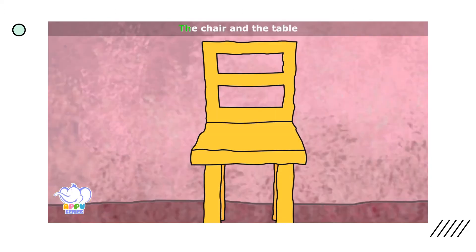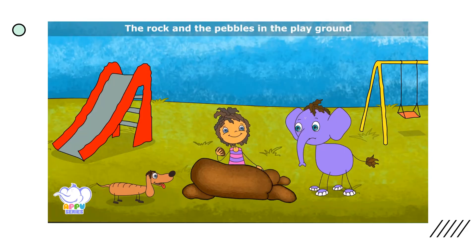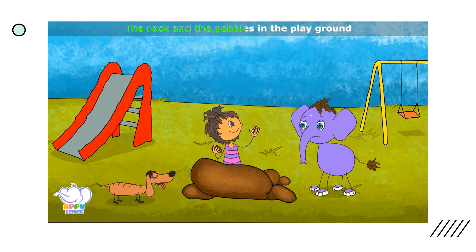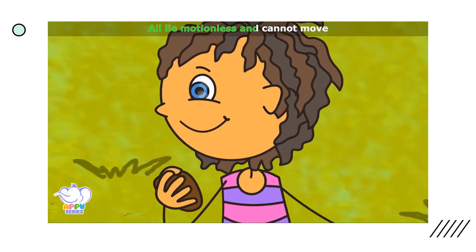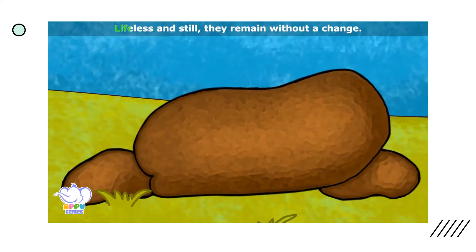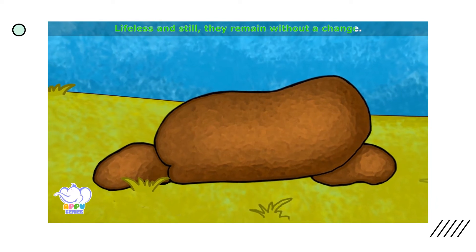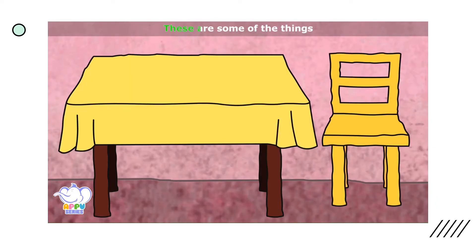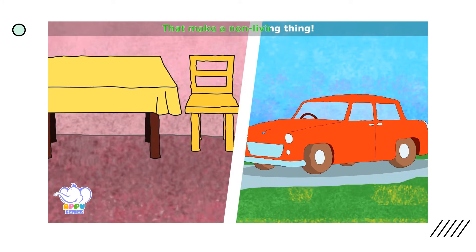The chair and the table, the car and the sand mound, the rock and the pebbles in the playground — all lie motionless and cannot move till someone pushes or gives them a pull. Lifeless and still, they remain without a change. These are some of the things that make a non-living thing.